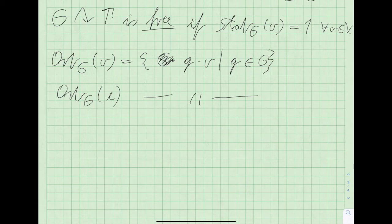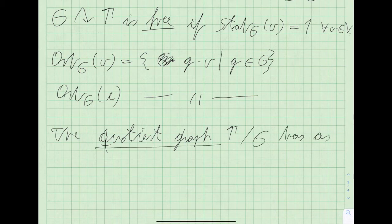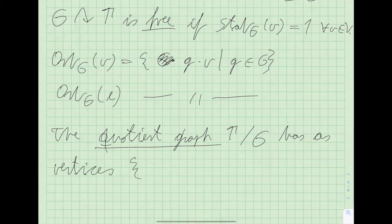Now we can define the quotient graph of an action. The quotient graph, denoted gamma mod G, has as its vertex set the set of vertex orbits.